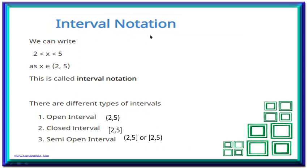Now, interval notation — very important, so please concentrate. We can write 2 < x < 5 as x ∈ (2, 5) using these small brackets. This symbol represents 'belongs to' and this is called interval notation. We have three different types of intervals: open interval uses two small brackets, closed interval uses two big square brackets, and semi-open interval uses one small and one big bracket.